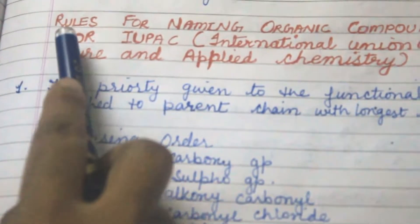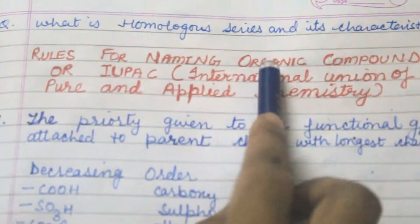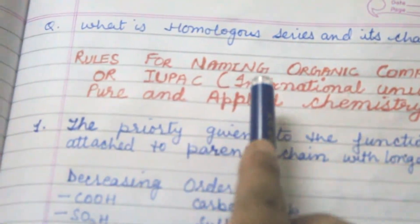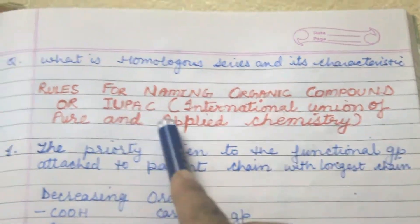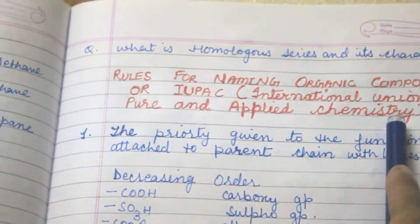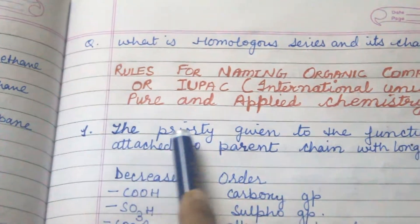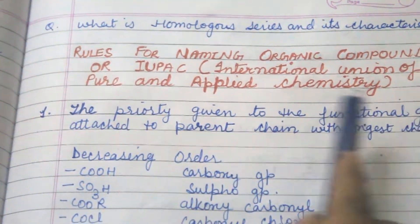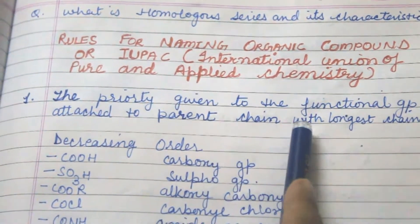Hello students. Today my topic is rules for naming organic compounds, or IUPAC name — that means International Union of Pure and Applied Chemistry. The first point is the priority given to the functional group attached to the parent chain with the longest chain.